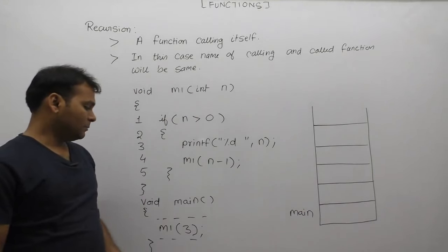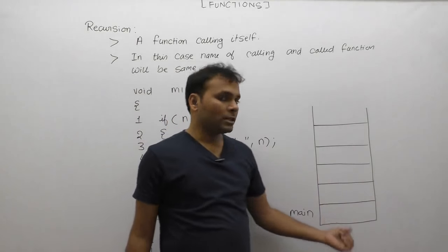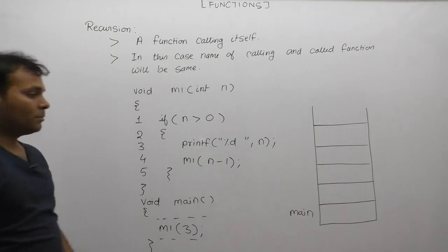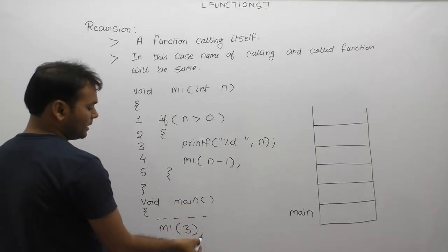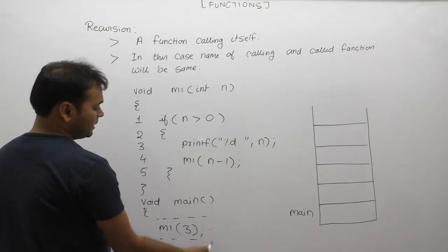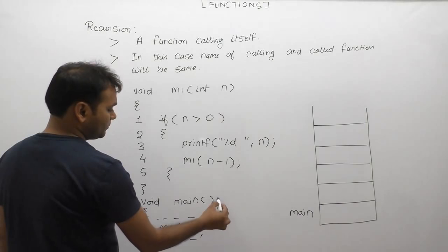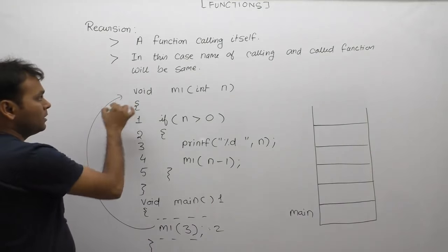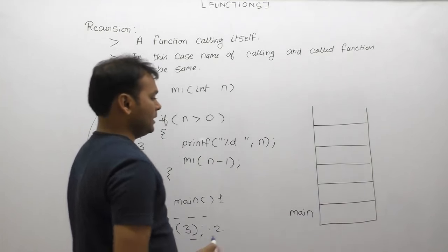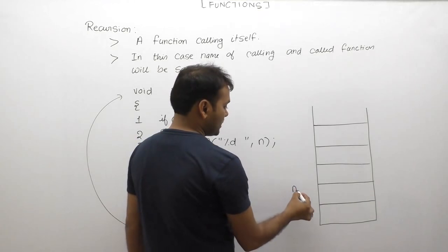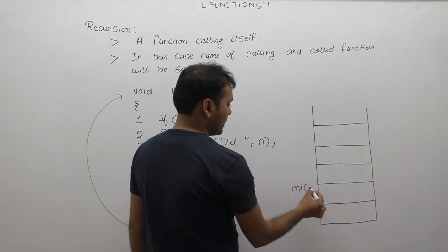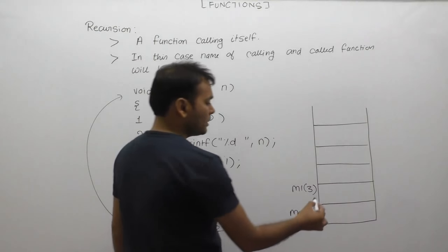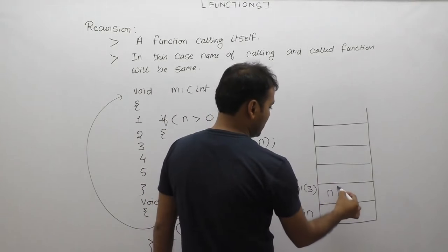Since main doesn't contain any variables, the operating system records the calling address of the main function. Then m1 is called from inside main. When m1 is called, control is immediately sent to the header of m1, and the m1 function is loaded on top of the stack. The supplied value is 3, so memory is allocated inside the stack for variable n.